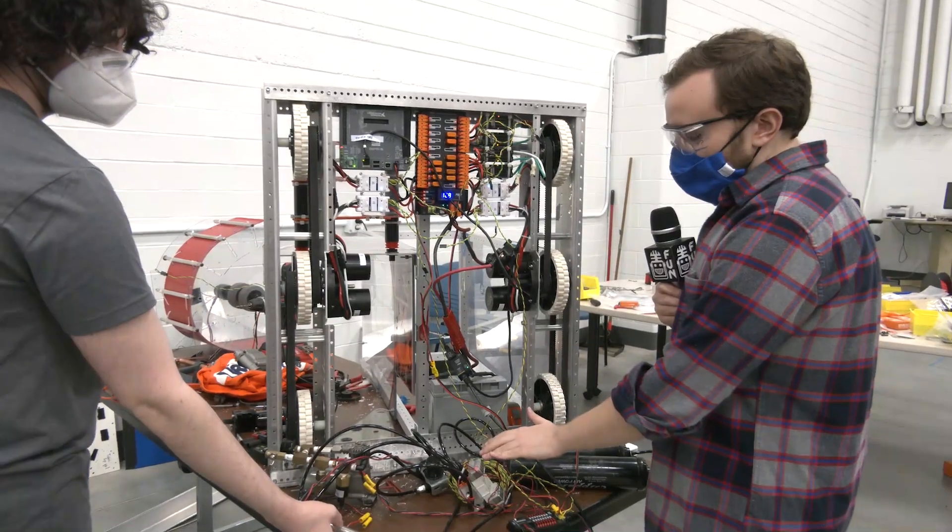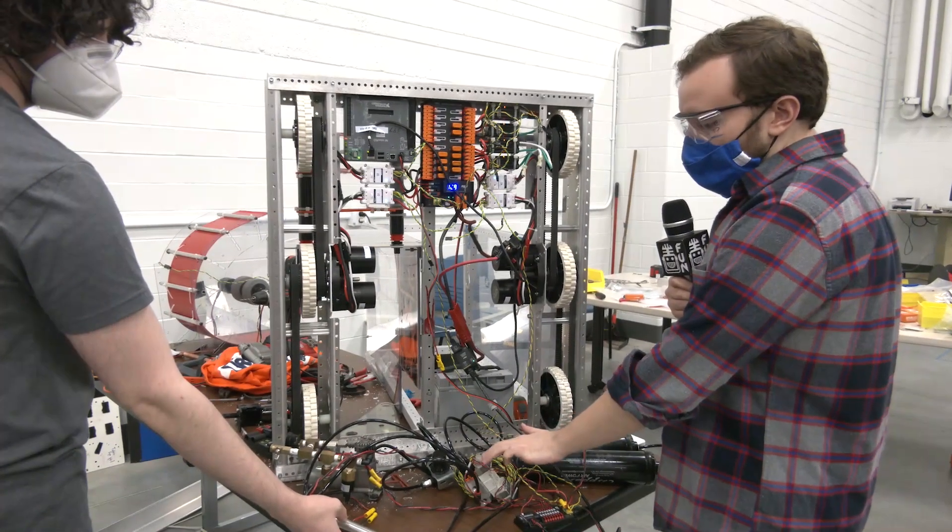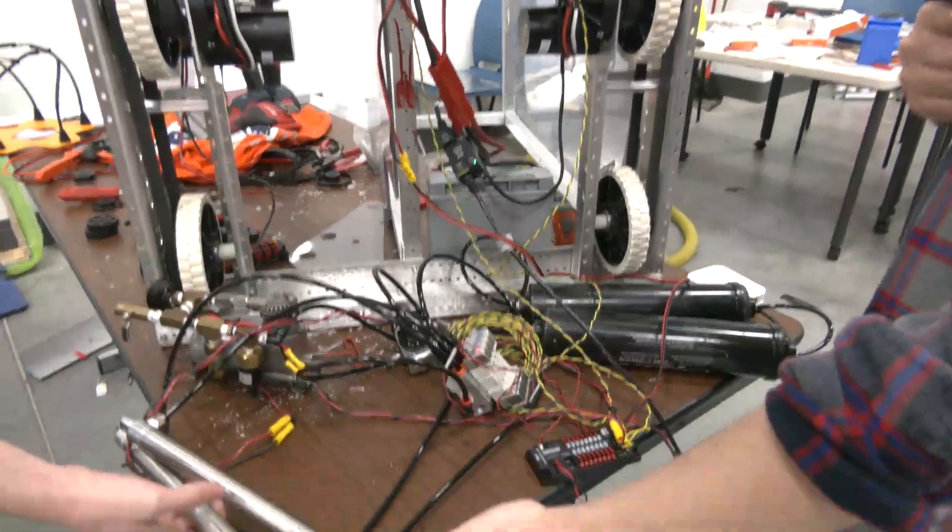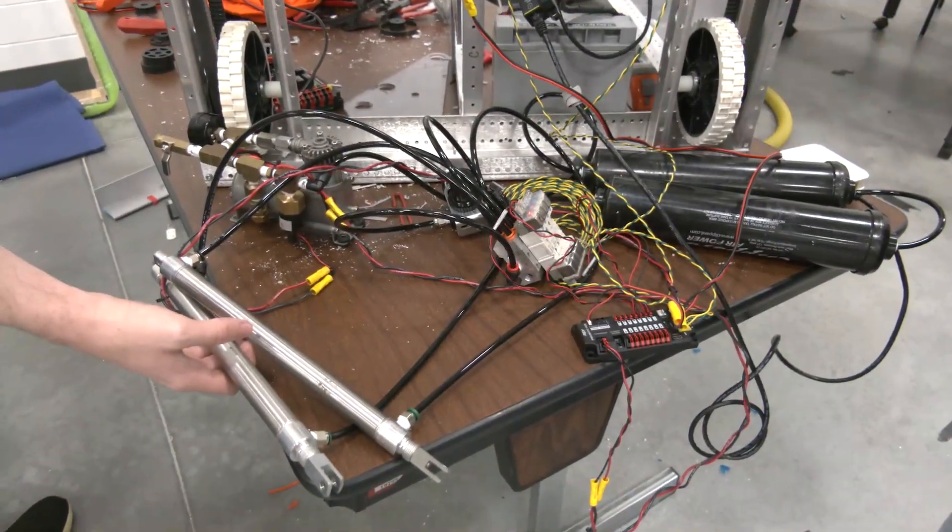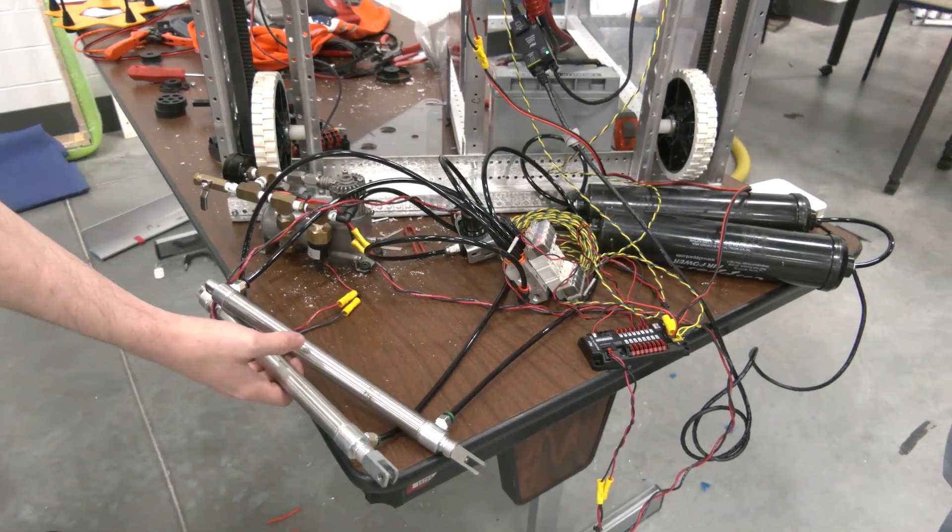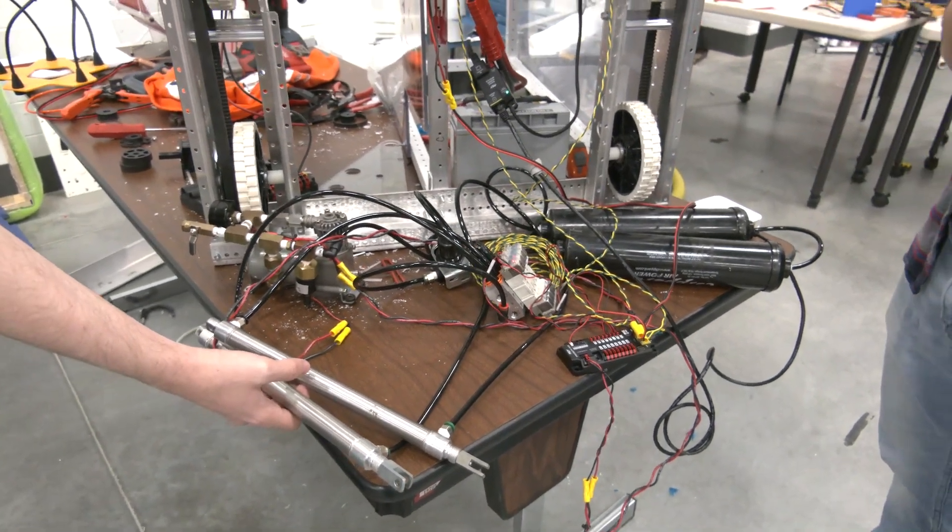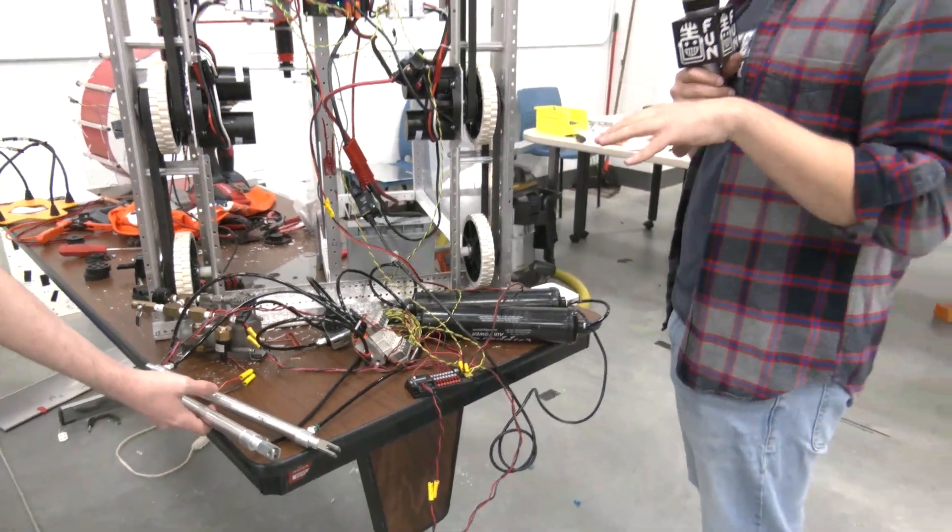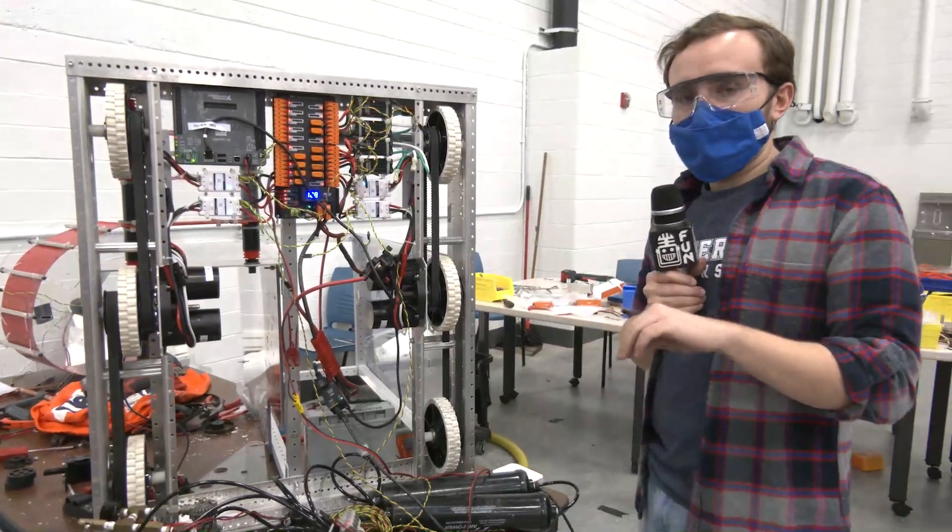We currently have two solenoids, both are two-way solenoids, each having access to their own cylinder. We are using eight-inch stroke, three-quarter bore cylinders. We're going to be using this on our game piece intake system. These are going to be controlling the position to raise and lower that system.